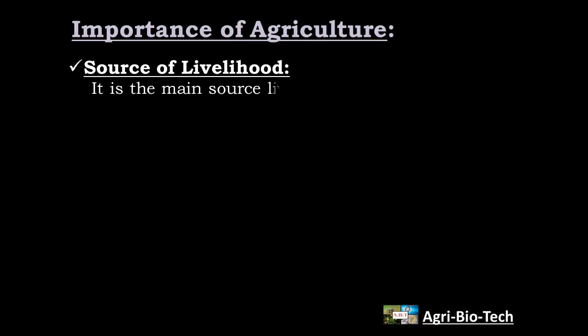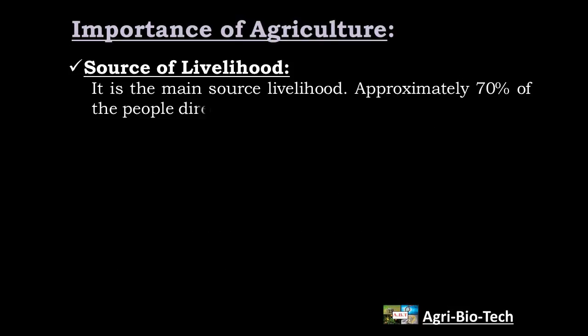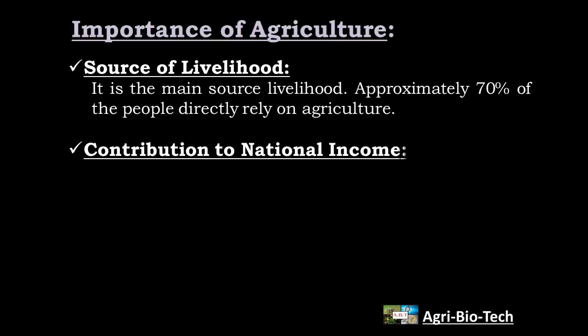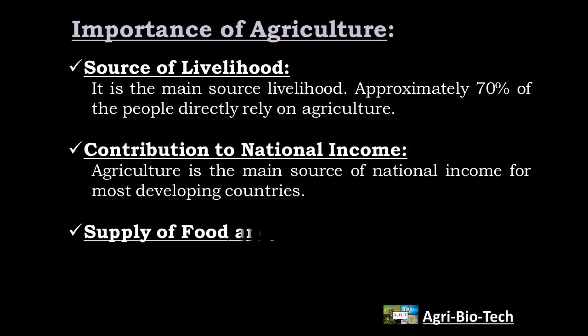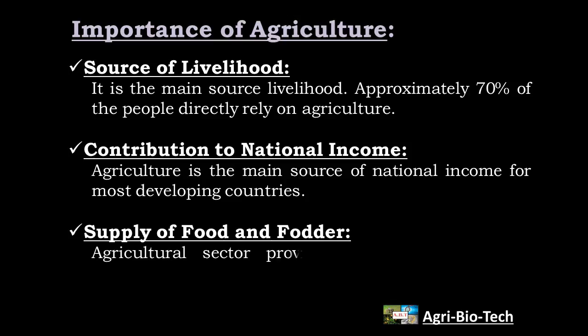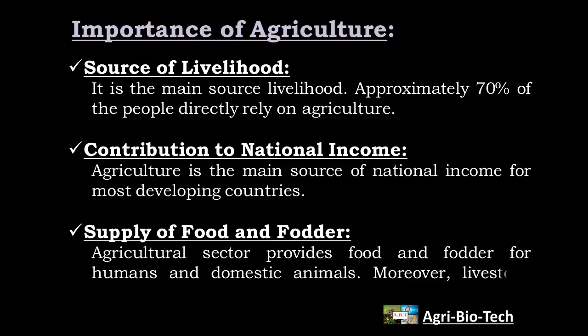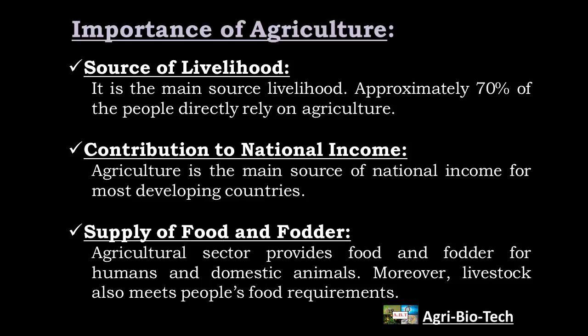First one is source of livelihood. Agriculture is the main source of livelihood. Approximately 70% of the people directly rely on agriculture as a means of living. Contribution to national income: agriculture is the main source of national income for most developing countries. Third one is supply of food and fodder. Agricultural sector provides food and fodder for humans and domestic animals. Moreover, livestock also meets people's food requirement.